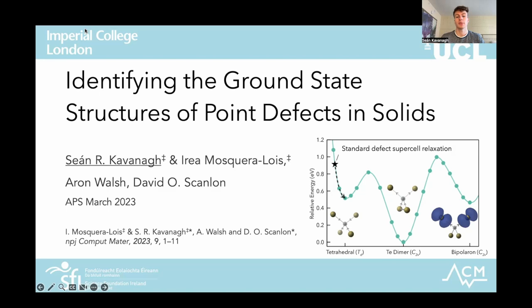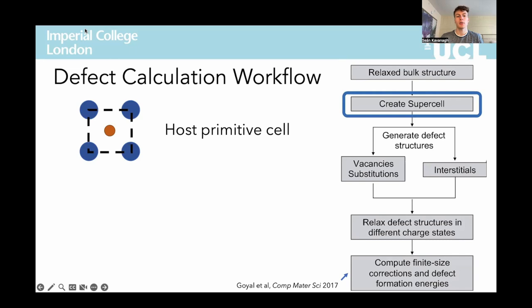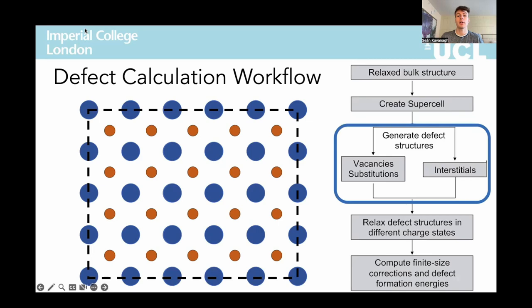So what is the standard approach for modelling defects in solids? We use the so-called supercell approach where we first start with our relaxed crystal structure for the host material. Then from this primitive cell, we create a supercell of the crystal large enough to avoid significant defect-defect interactions with neighbouring supercells. With this supercell as our base, we can then go on to generate the different types of defects that we'd like to calculate.